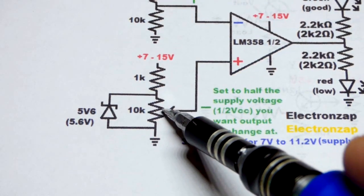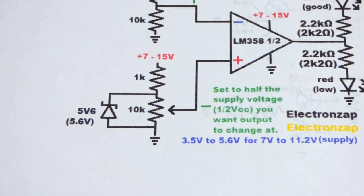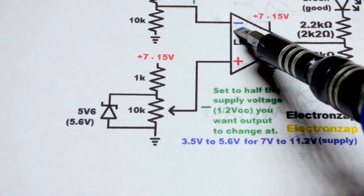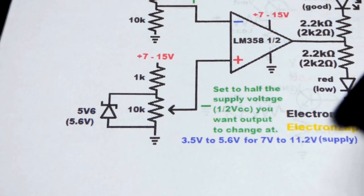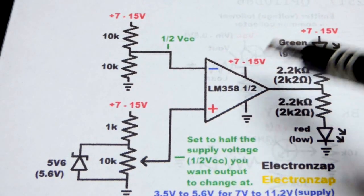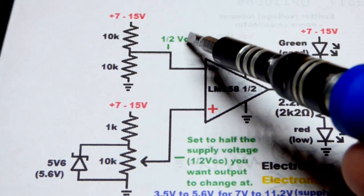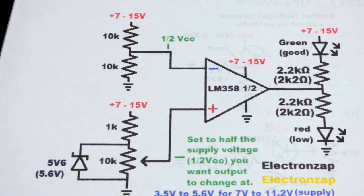If we set the trim pot to 4 volts, then it's going to compare when the inverting input is above or below 4 volts, which means the power supply is above or below 8 volts, because we're getting half of the supply voltage, half of VCC at the inverting input.